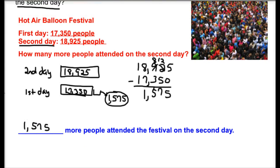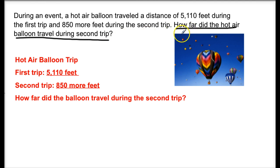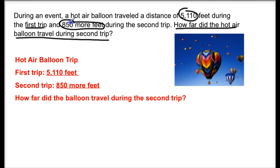Let's try another one. During an event, a hot air balloon traveled a distance of 5,110 feet during the first trip and 850 more feet during the second trip. How far did the hot air balloon travel during the second trip? We're trying to figure out how far it traveled during the second trip. We know it traveled 5,110 feet the first trip and then 850 more feet during the second trip.